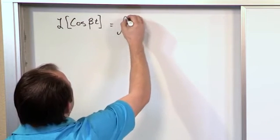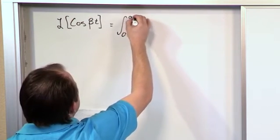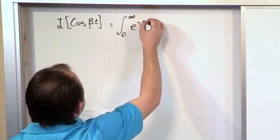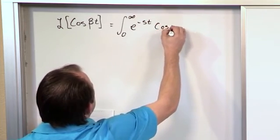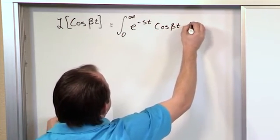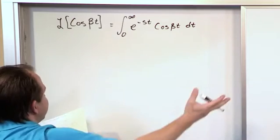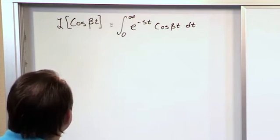So what we're going to do is apply the definition: zero to infinity e to the minus st cosine beta t dt. So again, if you know how to integrate this, then you're done. That's the Laplace transform. That's what we're going to do.